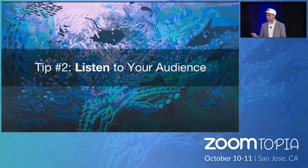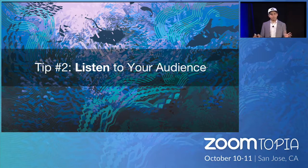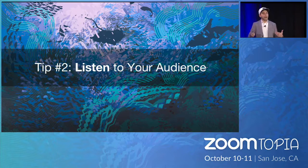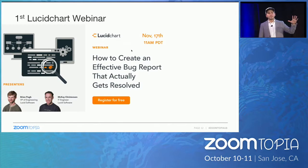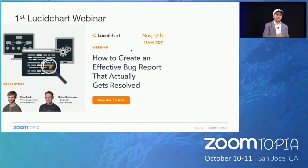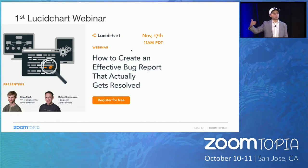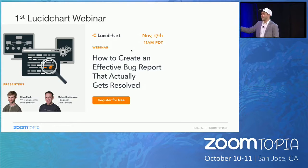Tip number two: listen to your audience. Never make assumptions — they know what they want, and they should be able to tell you what you need to be posting for your webinars. At Lucidchart, in our very first webinar, I didn't want to make it a product pitch. Most webinars default to 'let's talk about our product.' Assuming that wasn't what our users wanted, I said, 'Let's talk about something totally different.' Our first webinar was 'How to Create an Effective Bug Report That Actually Gets Resolved.'